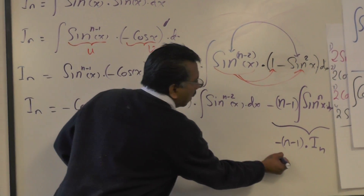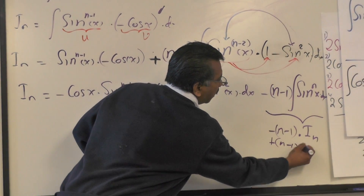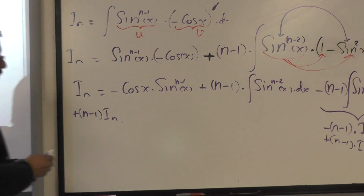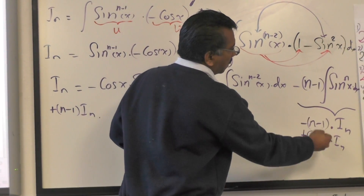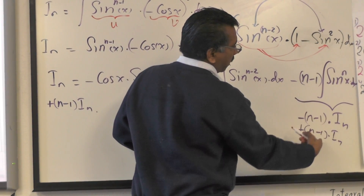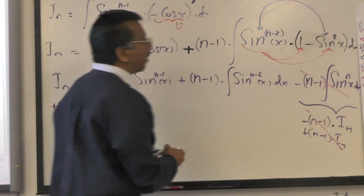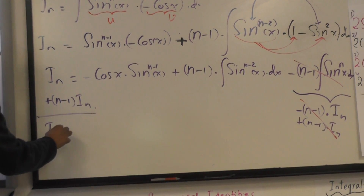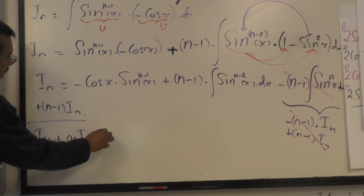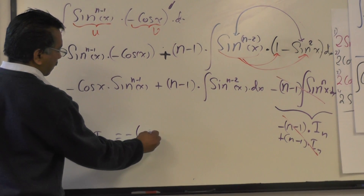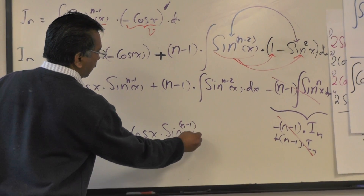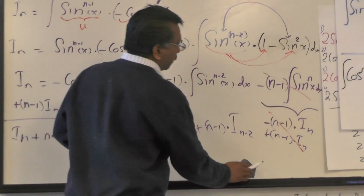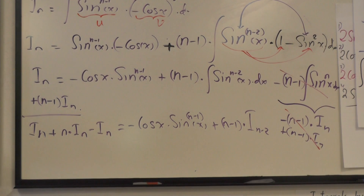So I add (n−1)Iₙ to both sides. On the right side this crosses out; on the left side we get Iₙ + (n−1)Iₙ = nIₙ. So: nIₙ = −cosx · sinⁿ⁻¹x + (n−1)Iₙ₋₂. The power has been reduced by two — that's the key: Iₙ is now expressed in terms of Iₙ₋₂.